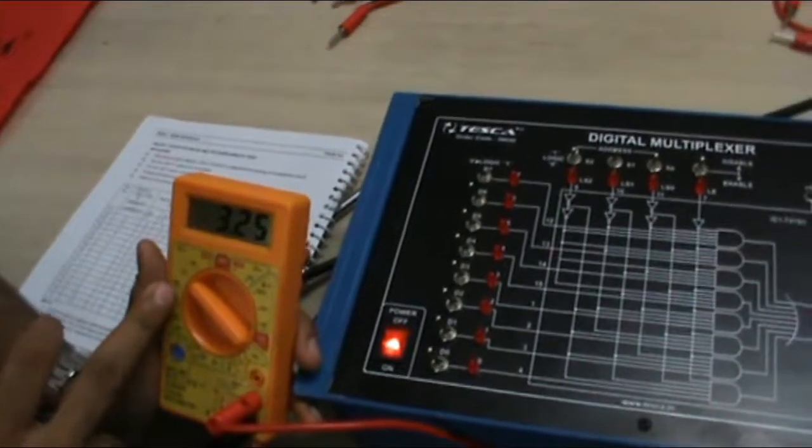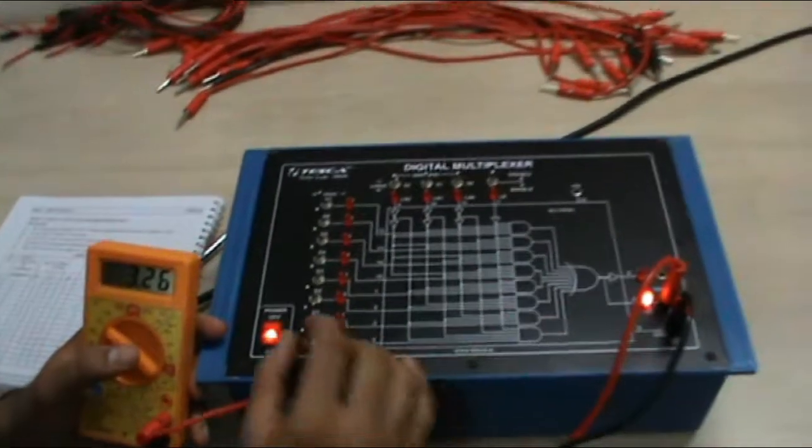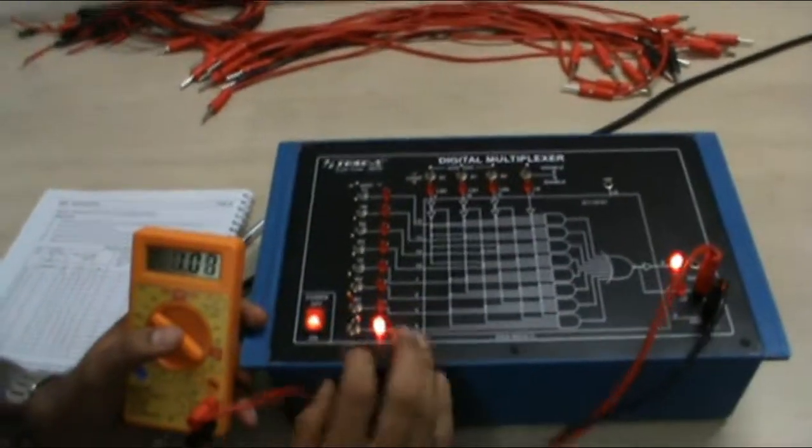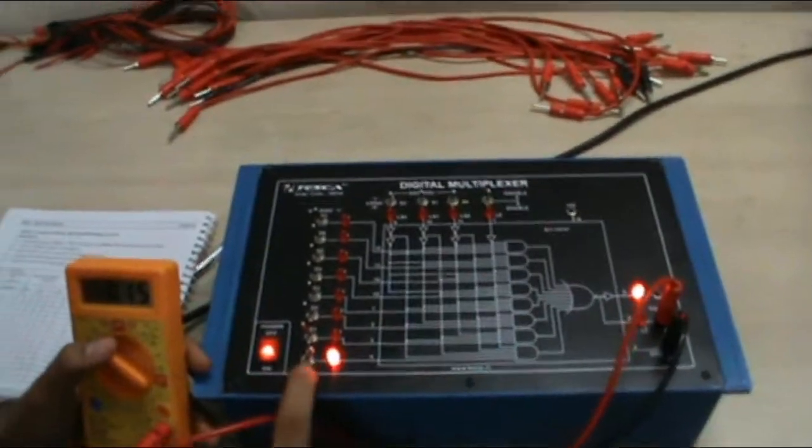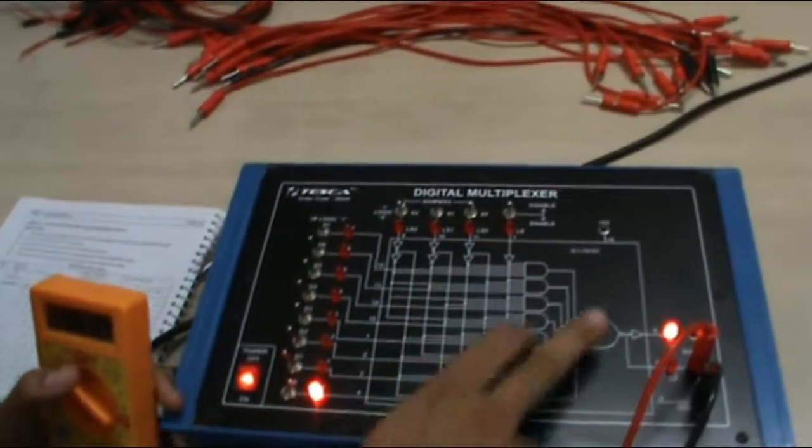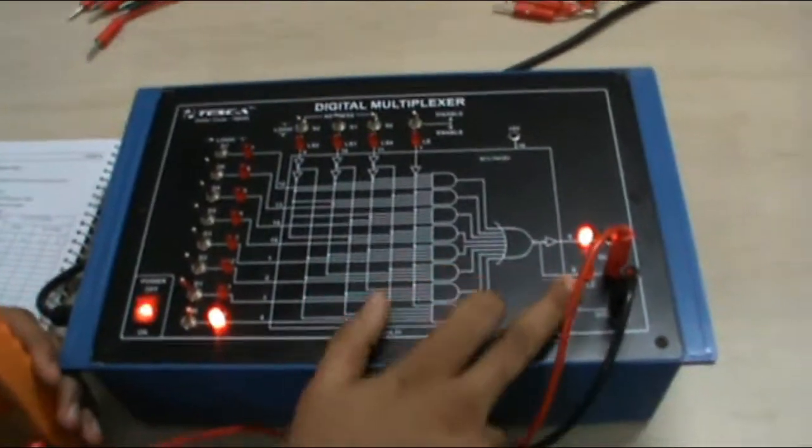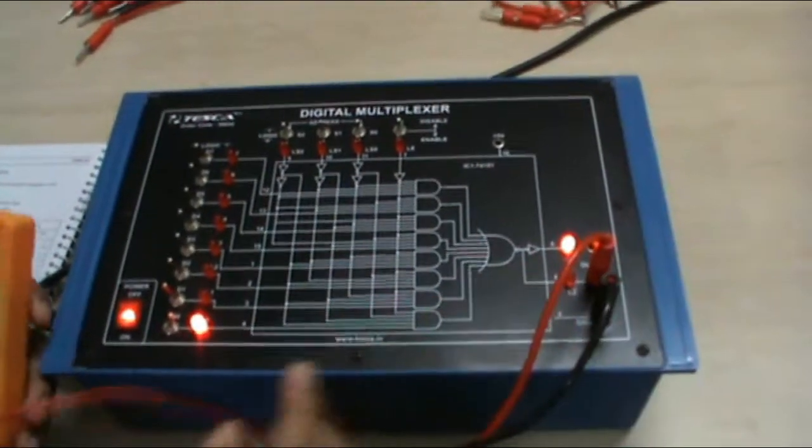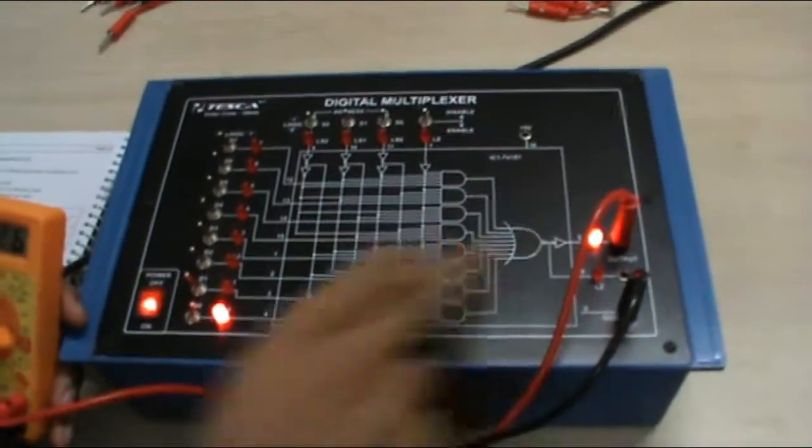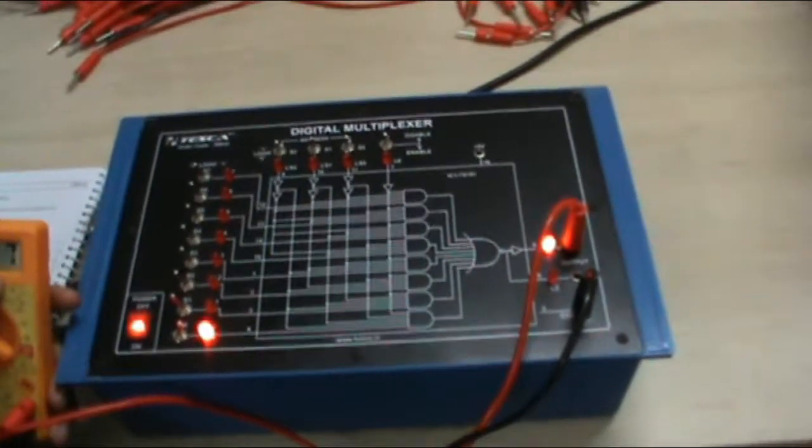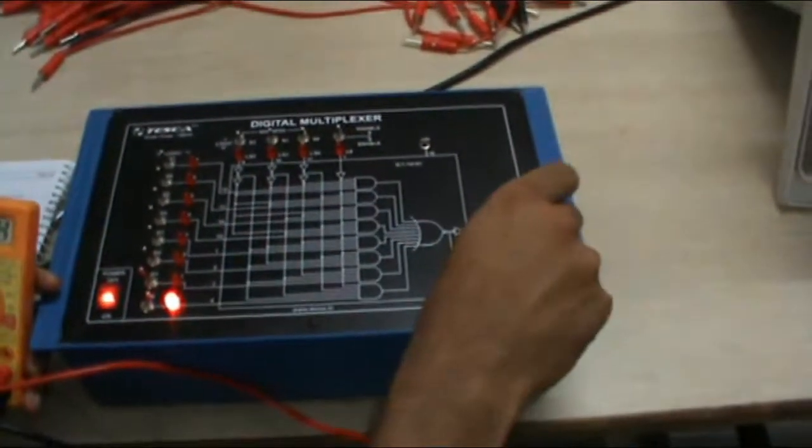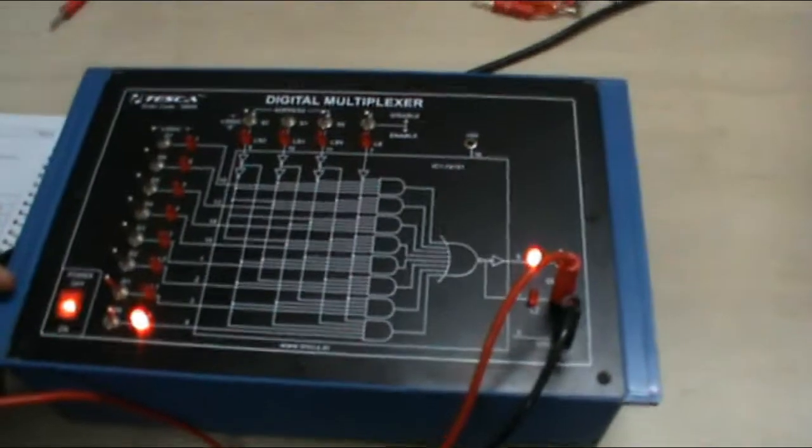Now the same we have to do for level 1. When we give D0 to level 1 and same address lines to 0 0 0, the output of this is LZ is 1 and LZ bar is 0. The output voltage is LZ is 3.26V and the output voltage of LZ bar is 0.15V.